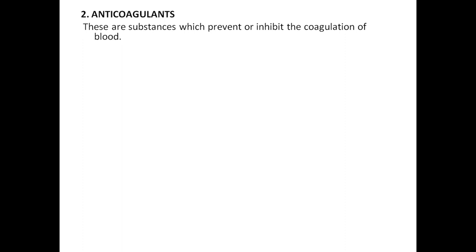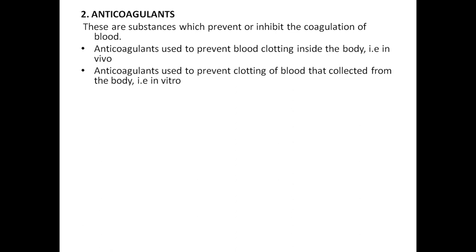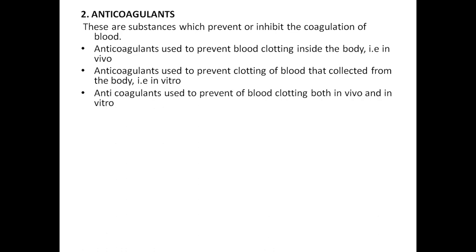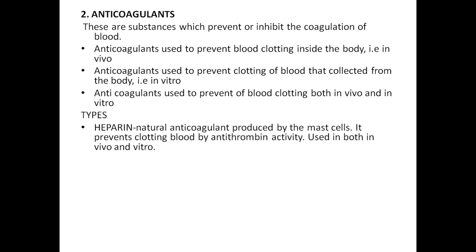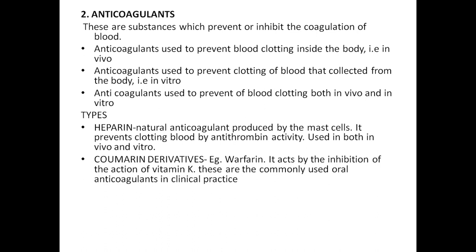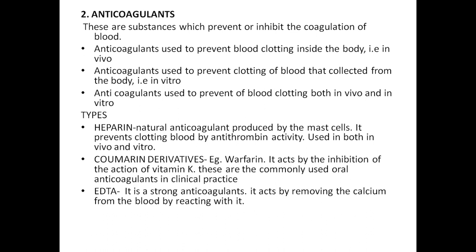The second question is anticoagulants. These are substances which prevent or inhibit coagulation of blood. Anticoagulants used to prevent blood clotting inside the body are called in vivo anticoagulants; those used in vitro prevent clotting outside the body. Heparin is a natural anticoagulant produced by mast cells; it prevents clotting by antithrombin activity and is used in both in vivo and in vitro. Coumarin derivatives — example warfarin — act by inhibiting the action of vitamin K and are commonly used as oral anticoagulants. EDTA is a strong anticoagulant that acts by removing calcium. Citrate and oxalates have the same action as EDTA.